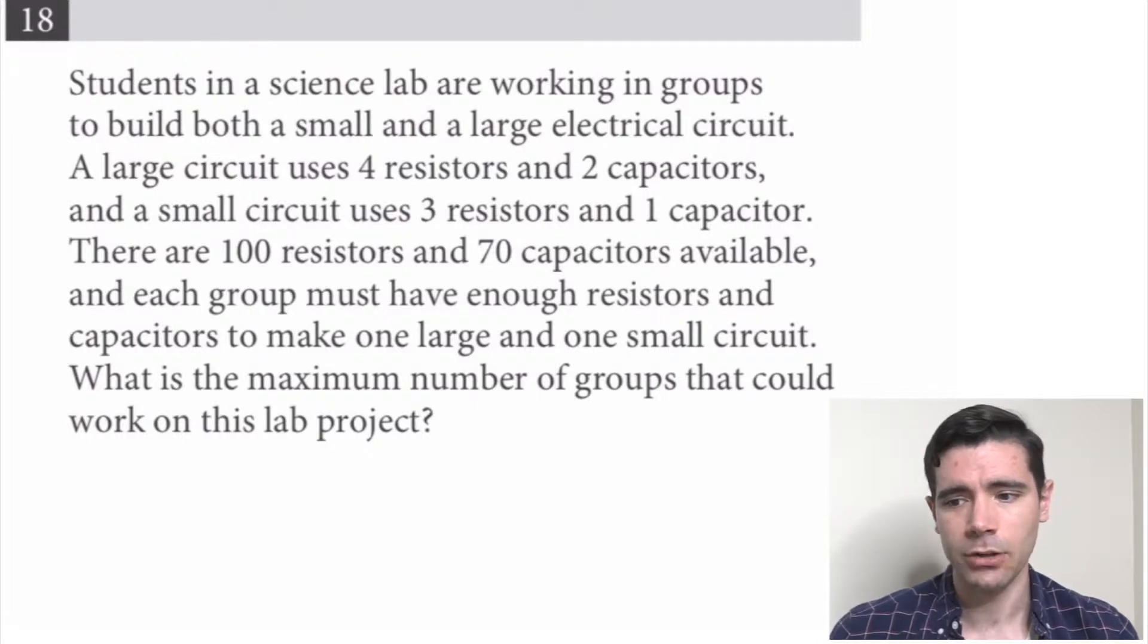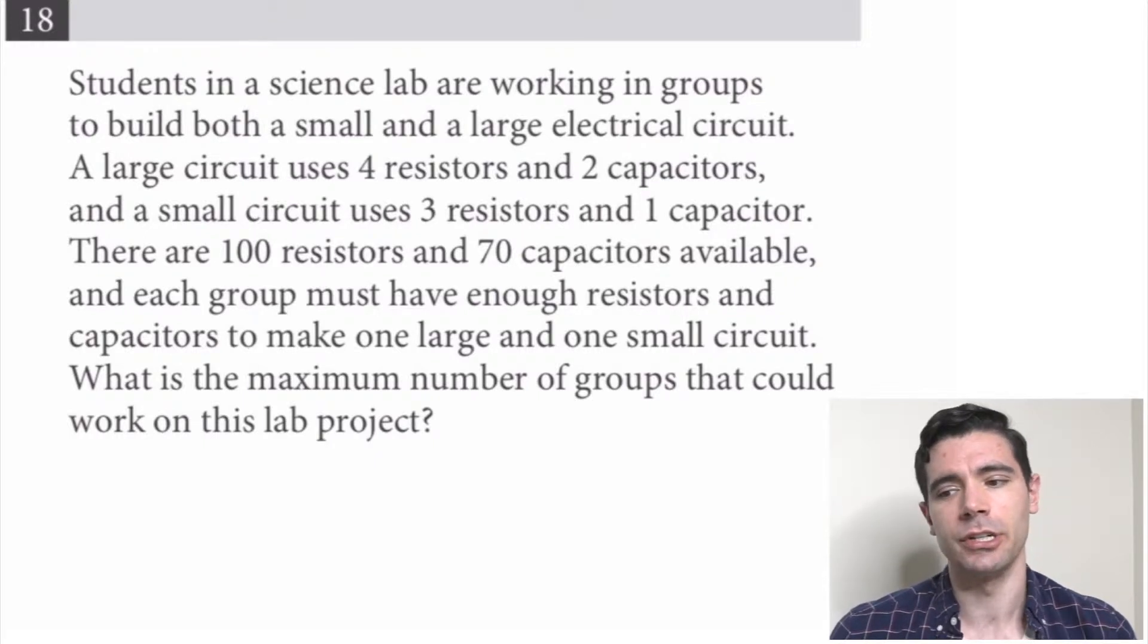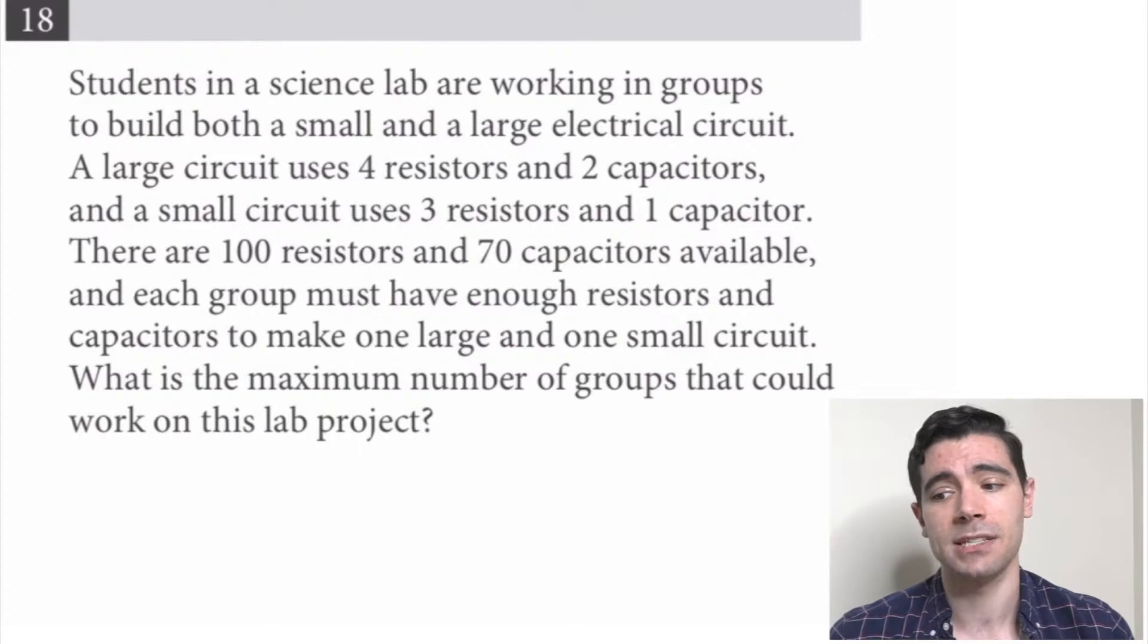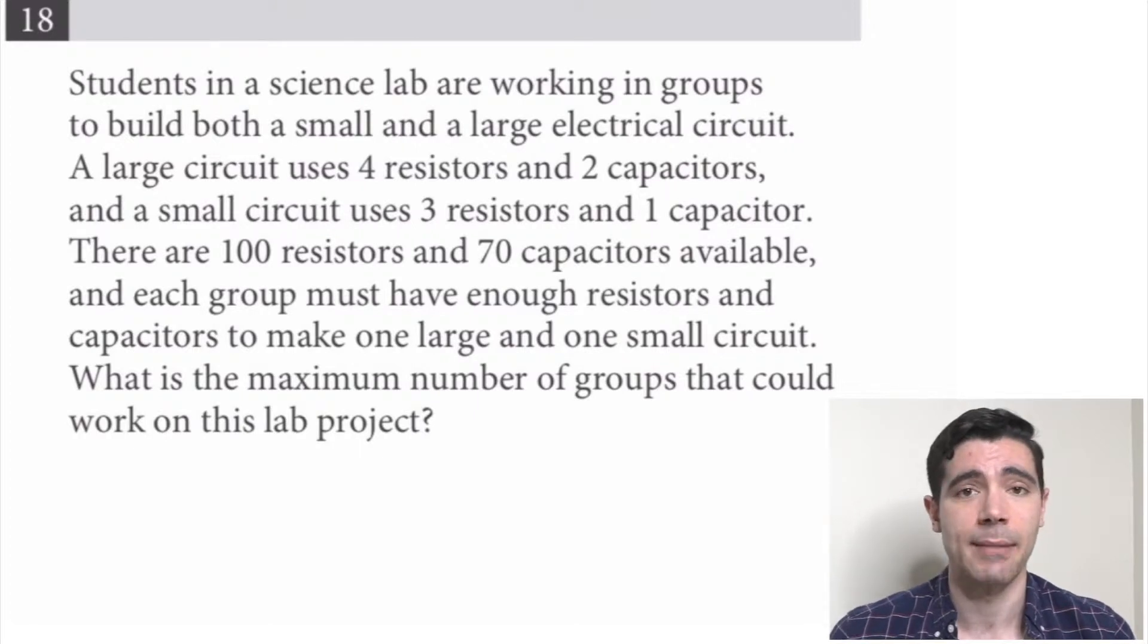students in a science lab are working in groups to build both a small and a large electrical circuit. A large circuit uses four resistors and two capacitors, and a small circuit uses three resistors and one capacitor. There are 100 resistors and 70 capacitors available, and each group must have enough resistors and capacitors to make one large and one small circuit. What is the maximum number of groups that could work on this lab project?